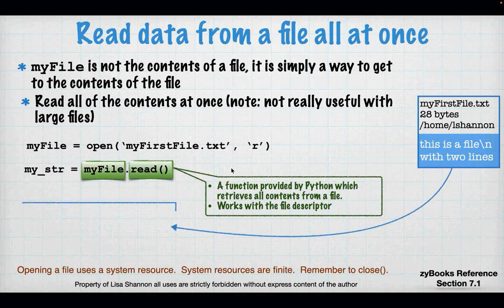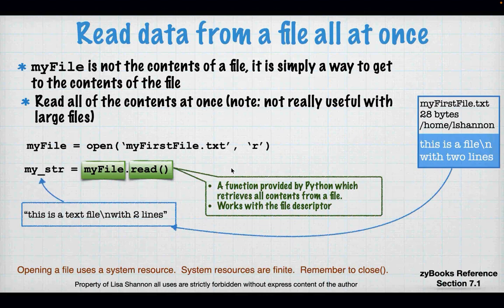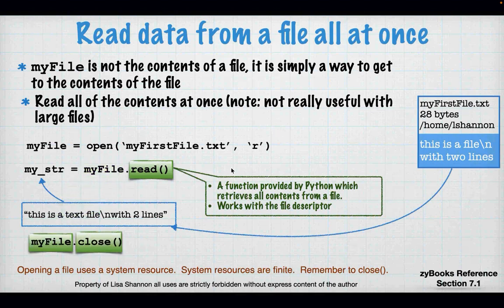And that's one of the ways that Python is separating us from the operating system. And what happens when I read the file? I get the contents of the file, which to Python look like this. To my human eye there would be a carriage return, but that slash n in the middle is actually what Python sees. So remember to close your file.